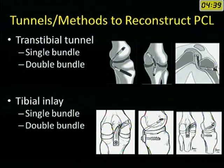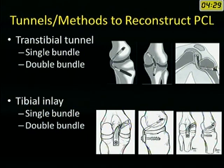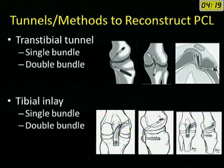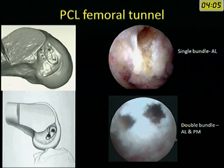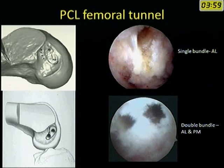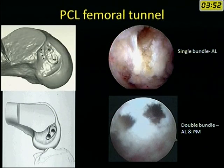There are two main methods to reconstruct the PCL. The popular transtibial method involves drilling a tunnel in the tibia and femur to fix the graft. In the tibial inlay method, you drill a tunnel in the femur but not in the tibia — instead you go to the back of the tibia to fix the graft. In both methods you can reconstruct either the single anterolateral bundle or both bundles. For femoral tunnels, drilling is at the anatomical insertion site; a single bundle reconstruction targets the anterolateral bundle, while double bundle reconstruction requires two femoral tunnels.